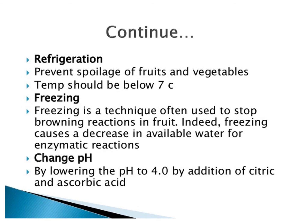If the temperature is below 7 degrees Celsius, freezing is a technique that stops the browning reaction in fruits. Freezing causes a decrease in available water for enzymatic reactions. Another approach is changing the pH by lowering it to 4 through the addition of citric acid and ascorbic acid, which are present in lemon juice.